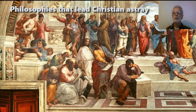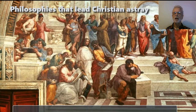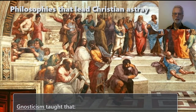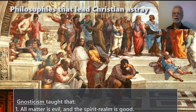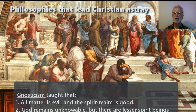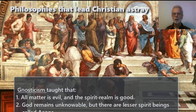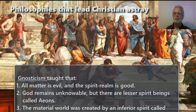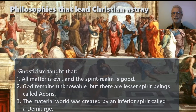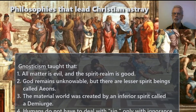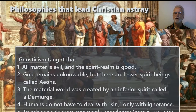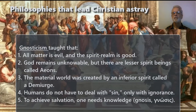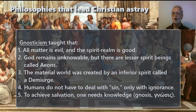In the first and second centuries, the Christian movement was often challenged by a philosophy called Gnosticism, which taught that all matter is evil and that the spirit realm is good. Secondly, God remains unknowable, but there are lesser spirit beings called Aeons. Thirdly, the material world was created by an inferior spirit called a Demiurge. Humans do not have to deal with sin, only with ignorance. And fifthly, to achieve salvation, one needs knowledge — Gnosis.